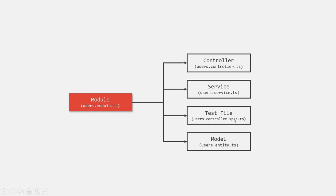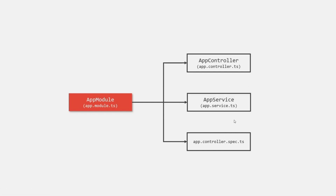The spec.ts file is also an important file, because inside it we write the testing logic for that particular controller of a given module, but we can also omit this file. Now when we create a NestJS project for the first time using the NestJS CLI, by default it comes with one module called the app module. The app module is the main module of a NestJS application and is used to connect to other modules. Every other module which we create needs to be connected to this app module, because the NestJS application only knows about the app module.